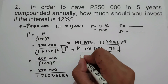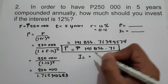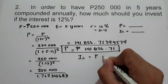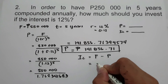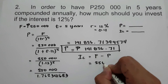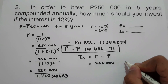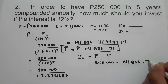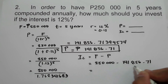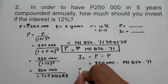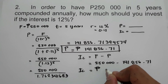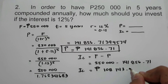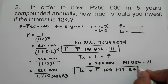What about the compound interest? To find compound interest, we use the formula future value minus principal. Future value is 250,000 minus the principal of 141,856.71. Subtracting, the compound interest is 108,143.29. So this will be our answer.